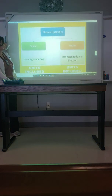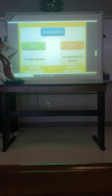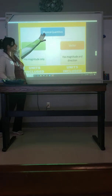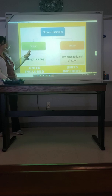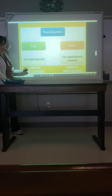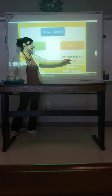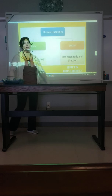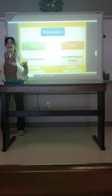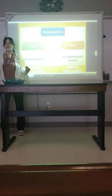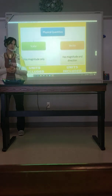Here's a graphic organizer: physical quantities are broken into two types. Scalar has magnitude and units. Vector has magnitude, direction, and units. Both have magnitude and units — the only difference is that vector also requires direction.